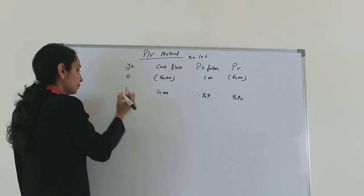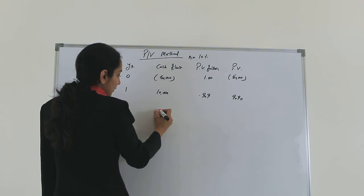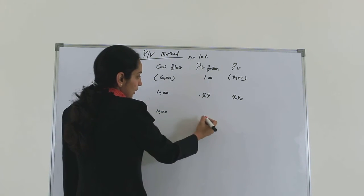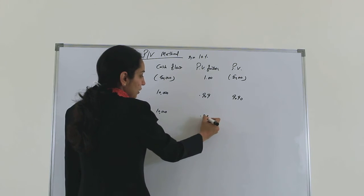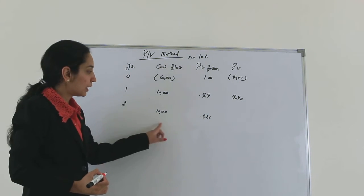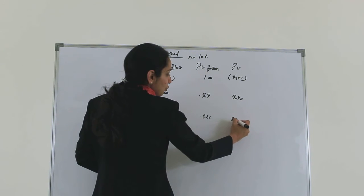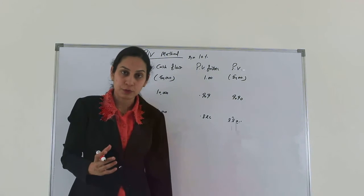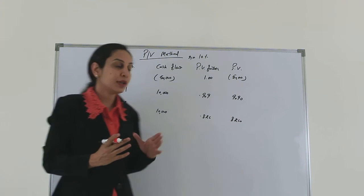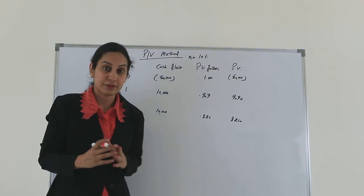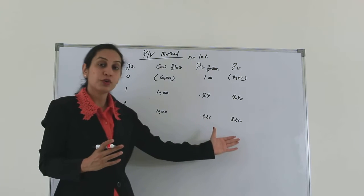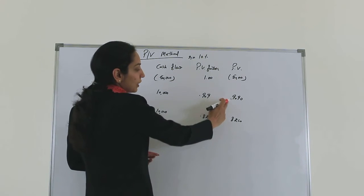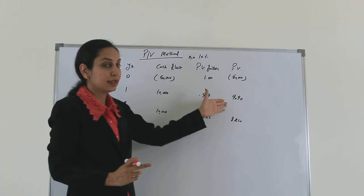For year two, the company expects $10,000 again. The present value factor is 0.826, giving a present value of $8,260. We continue this for whatever is the useful life of the project. Under the present value method, we calculate only the present values in the last column.